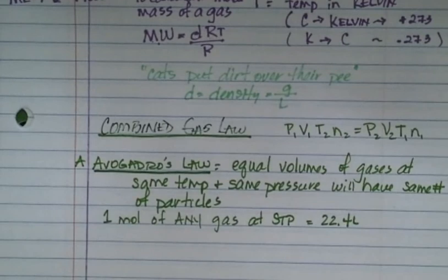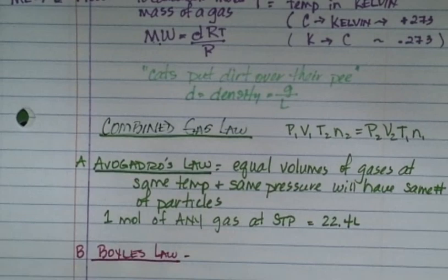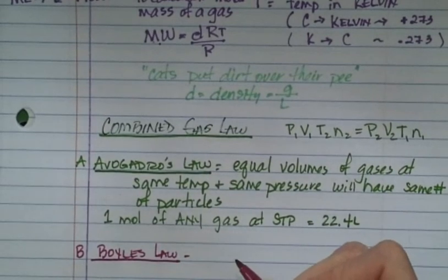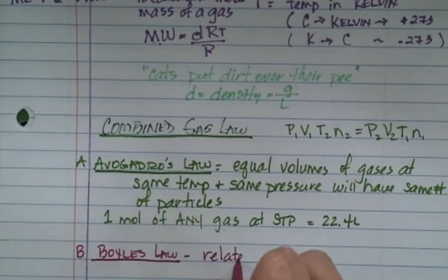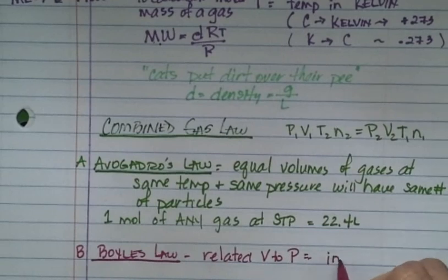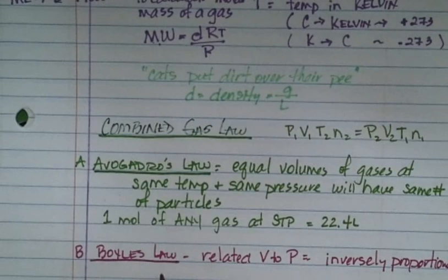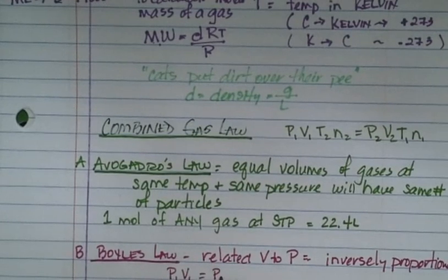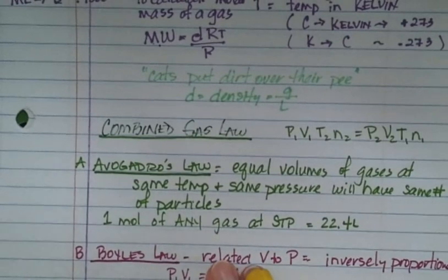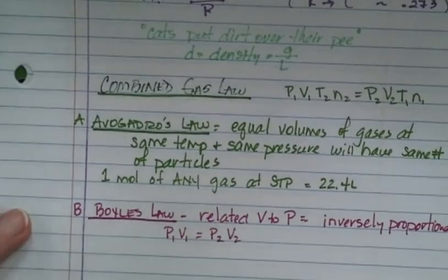The second one is Boyle's law. Boyle did all his experiments with volume and pressure. He found that volume and pressure are inversely proportional — if one goes up, the other goes down. Written as an equation: P1V1 equals P2V2. If you multiply these two numbers and get 10, then if one goes up, the other has to go down to keep the product at 10. That's what inversely proportional means.